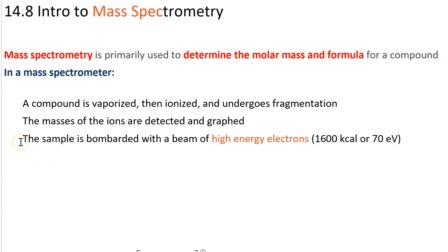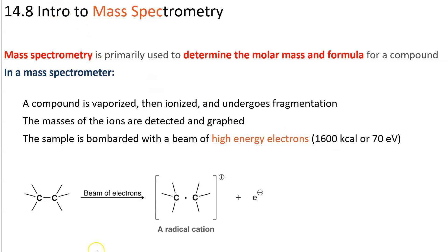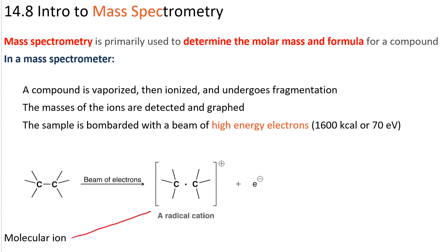In one kind of mass spec, ionization is achieved by bombarding the sample with a beam of high energy electrons around 70 electron volts. The electron beam comes in and knocks out one electron of a sigma bond, and you end up with a radical cation. The CC bond now only consists of one electron, and the overall fragment has a charge of plus one. This is called the molecular ion.